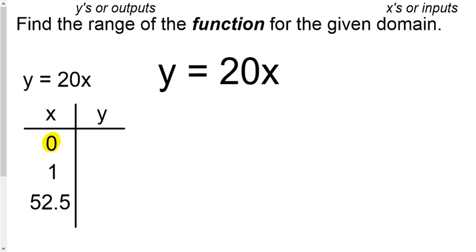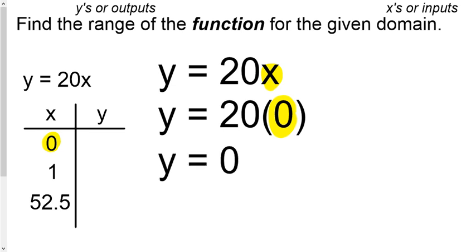Okay, so here we go. Here's our function rule, the equation, y equals 20x, and there's x equals 0. So where I see x in the equation, I want to make that x into a 0. And that x was multiplying 20, so 0 times 20 is 0. And now I know what my y is. My y is 0. So I'll write that down on my table.